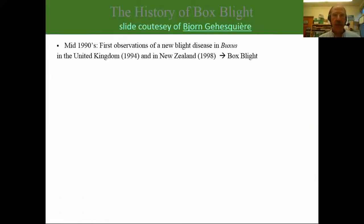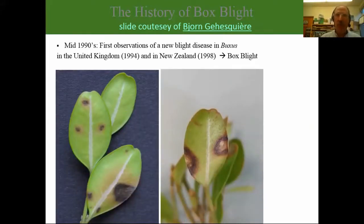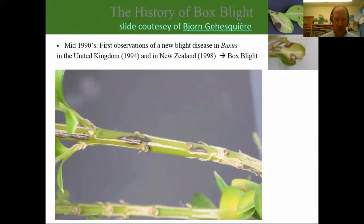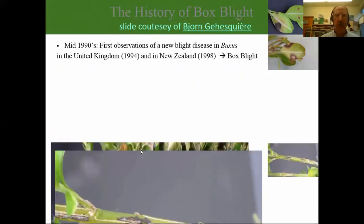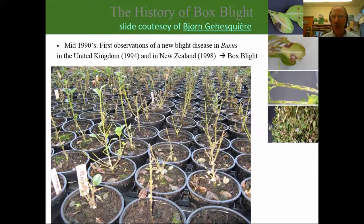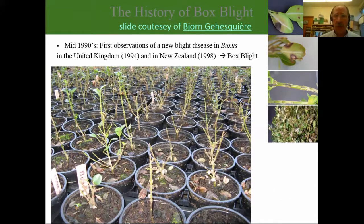The history of boxwood blight shows it first appeared in Europe — the United Kingdom in 1994, and New Zealand in 1998. By the 2000s it had spread throughout Western Europe. There are characteristic necrotic spots on the leaves with a white-brown halo, plus stem lesions. The disease is a leaf spotter and defoliator — leaves fall off the stems, and defoliation can be quite severe in nursery situations.